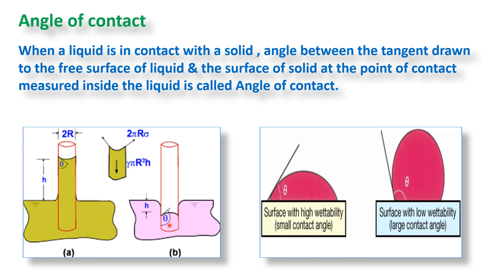The angle of contact is defined as the angle between the tangent drawn to the free surface of the liquid and the surface of the solid at the point of contact, measured inside the liquid. It is constant for a given solid-liquid pair. If the liquid wets the solid, the angle of contact is acute (less than 90°); if it does not wet the surface, the angle of contact is obtuse (greater than 90°). We will study this in more detail in the next lecture.